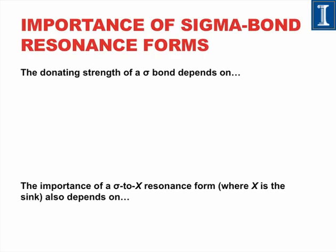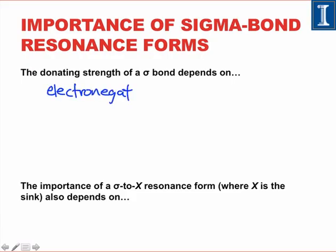What about the importance of resonance forms involving sigma bonds? There are two things to consider here. The first is the donating strength of the sigma bond involved in the resonance. That depends on largely two most important factors: the electronegativity of the atoms involved in the bond, which may be influenced by charge and other factors, and any electron donating groups or electron withdrawing groups that are attached to the atoms involved in the sigma bond, which may themselves be involved in resonance with the donating sigma bond.